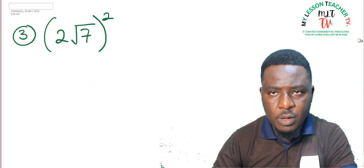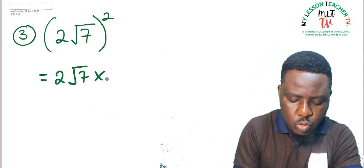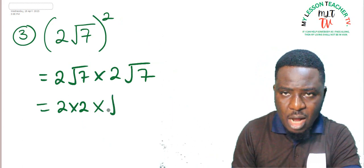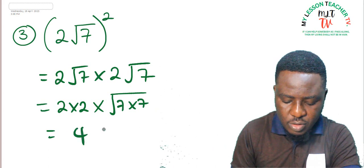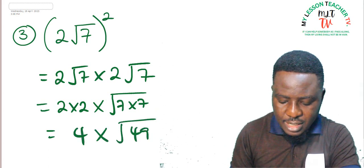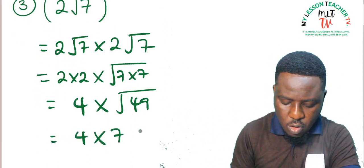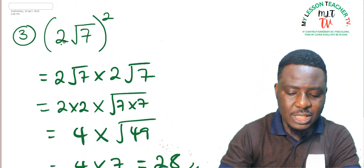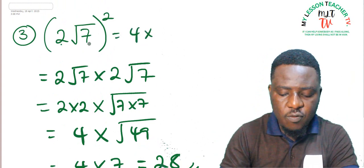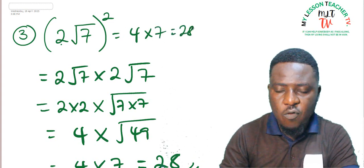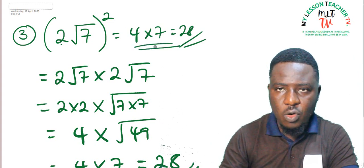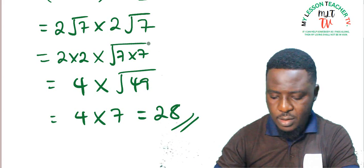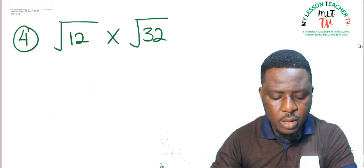Question 3: 2 root 7, all squared, equals 2 root 7 times 2 root 7. Multiply rational parts: 2 times 2 = 4. Multiply irrational parts: root 7 times root 7 = root 49 = 7. So this becomes 4 times 7 = 28. Alternatively, square of 2 is 4, square of root 7 is 7, and 4 times 7 = 28. Use the shortcut for objective tests; show full working for theory.